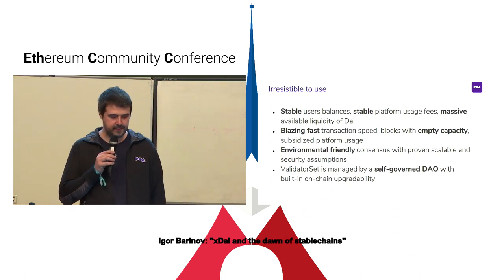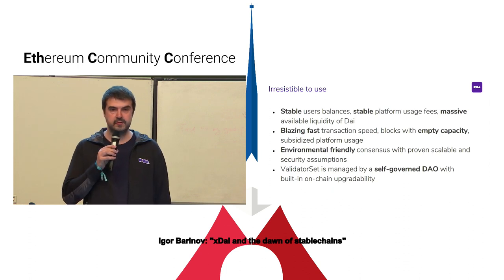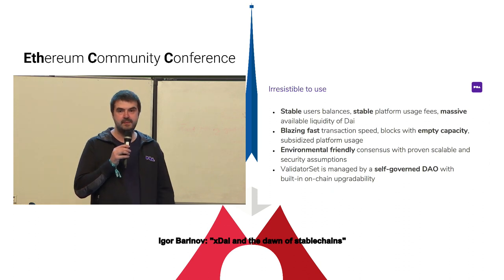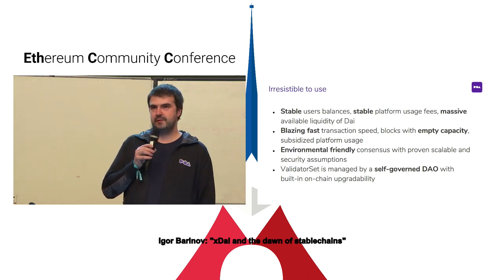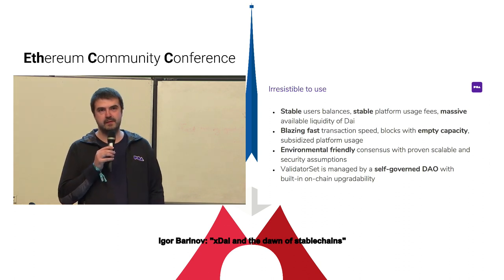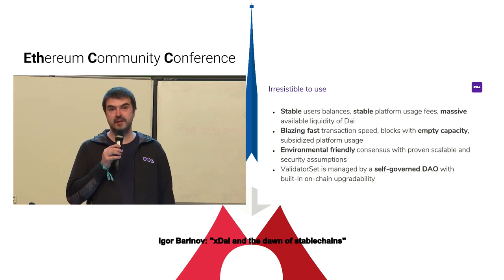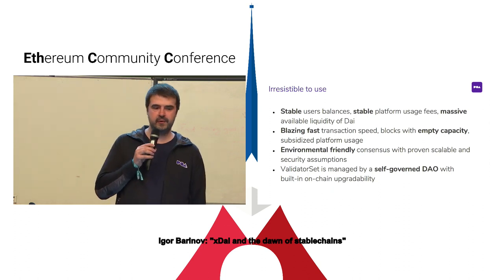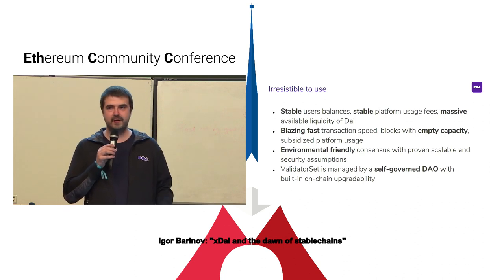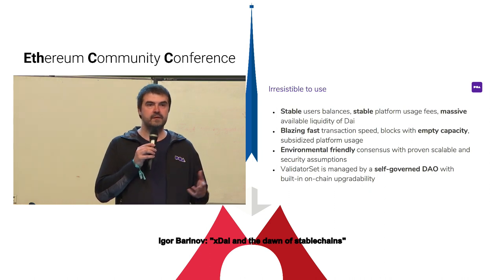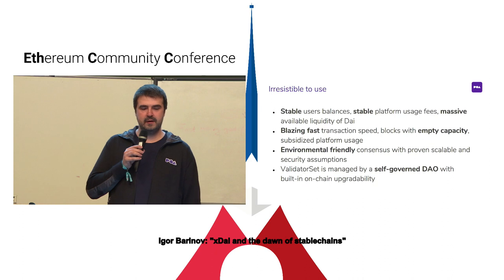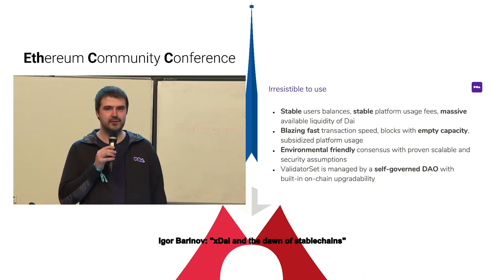The main thing about the consensus is who are the validators and how the validator set is managed. The validator set is a list of validators participating in creating blocks. This consensus is based on ideas of decentralized autonomous organizations - it's a self-governed DAO. The network started with one initial validator called the master of ceremonies with a trusted setup, and after achieving minimal viable decentralization, the network can be managed by this governance system where any existing validator can propose a new validator.